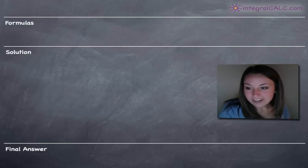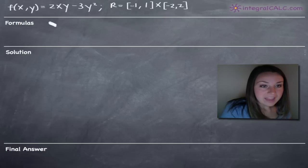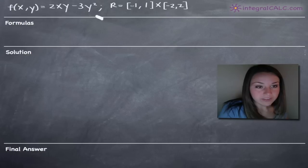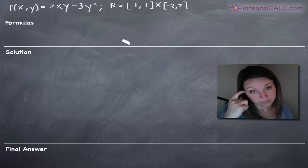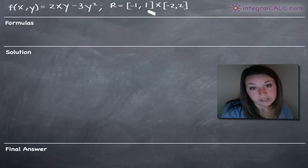Today we're going to be doing an iterated integral problem. The function is f(x,y) equals 2xy minus 3y squared, and we've been asked to find the integrated integral over the region negative 1 to 1 by negative 2 to 2. These coordinates define a rectangular region.